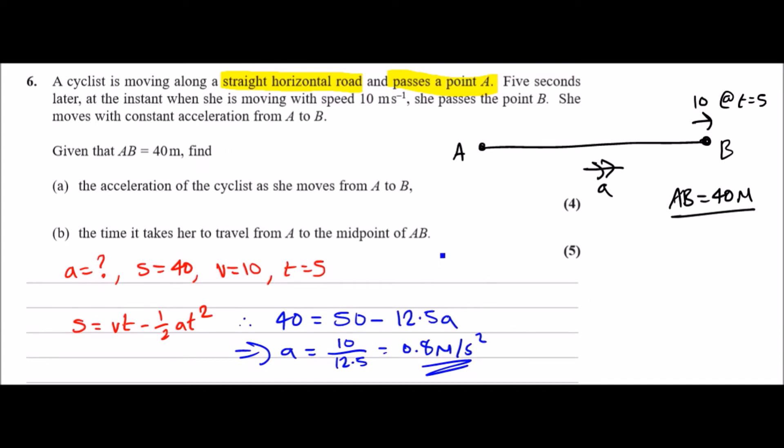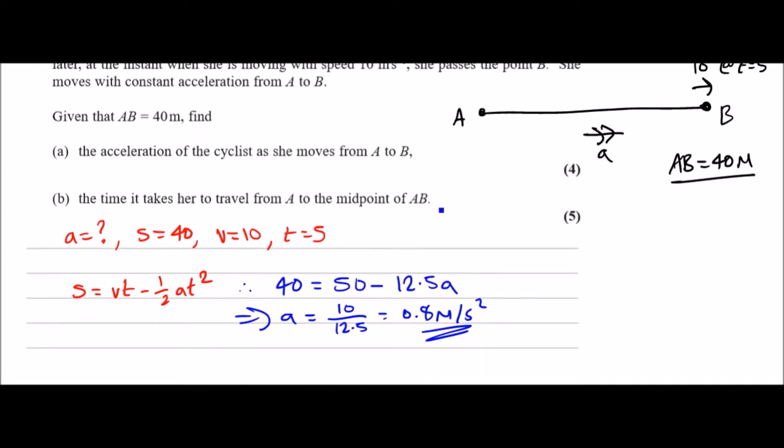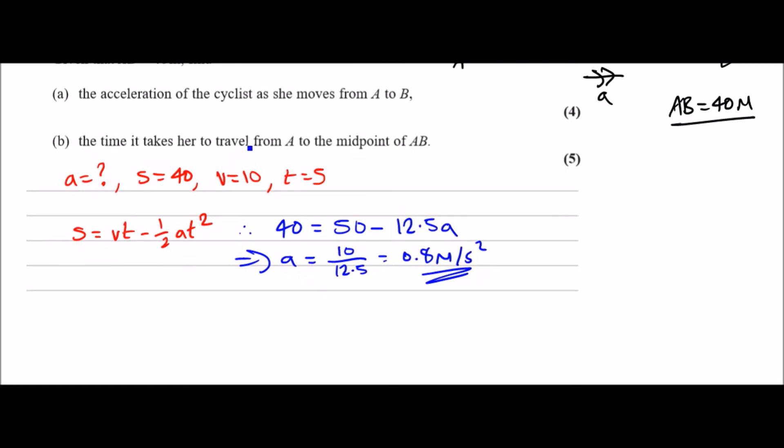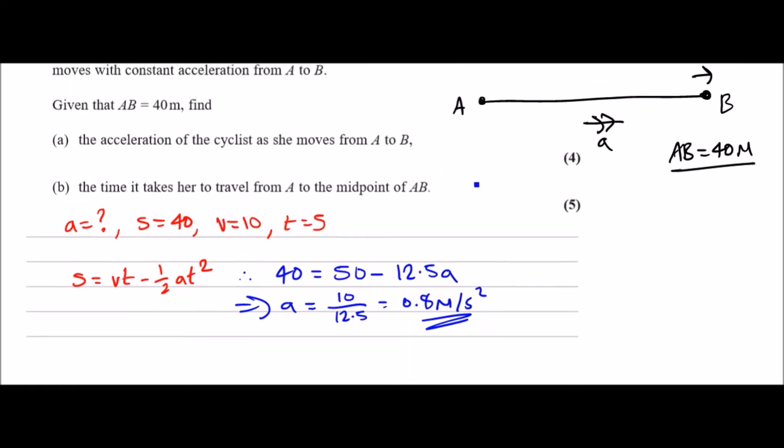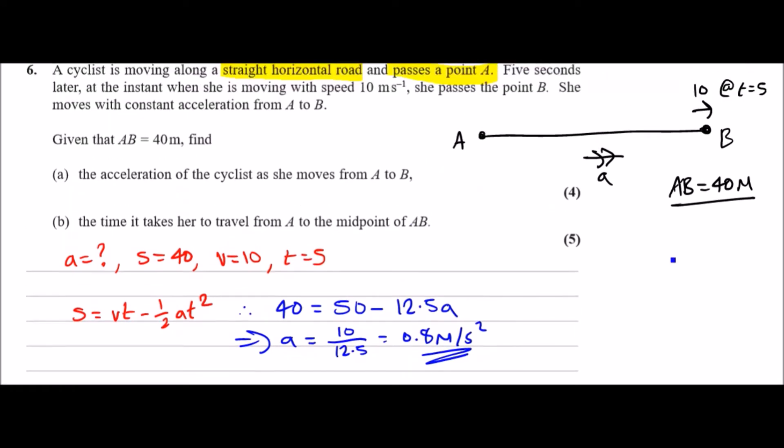Now let's move on to part b. We need to find the time it takes her to travel from A to the midpoint of AB. First things first, we don't know what the speed is at A, so we should try and evaluate this term. Let's call this one u for now. Before we get to the midpoint, which is 20 meters across, let's find out what the initial speed was using our original equation.